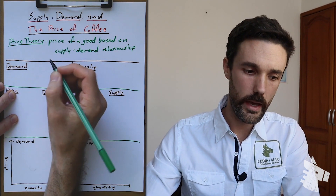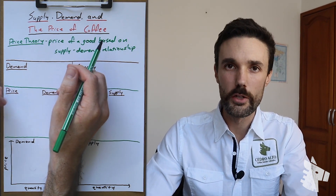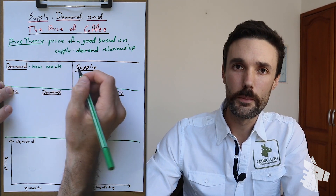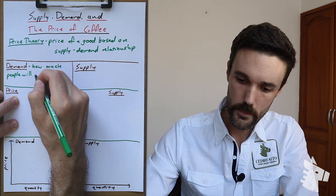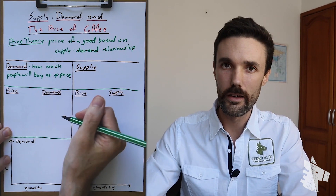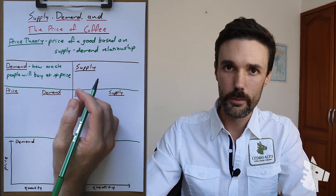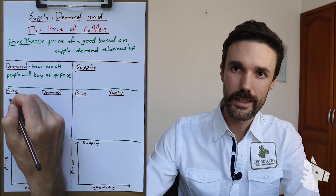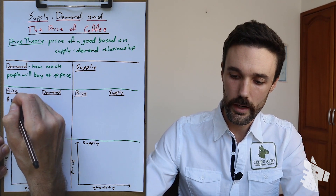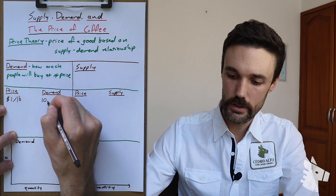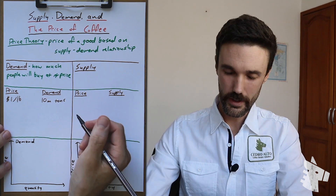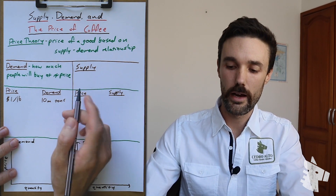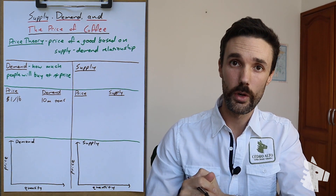First, let's take a look at demand. Obviously, demand has to do with how much people want stuff, but for the sake of clarity, let's say demand is how much of a good people will buy at a given price level. Let's look at an example — all of the numbers I'm using are completely fictitious. For example, let's say the price of coffee is $1 per pound; then let's say the demand is about 10 million tons. Don't worry about what form of coffee or what time frame — these are purely examples to show how the relationship between price and demand works.